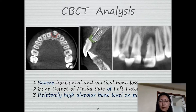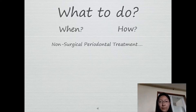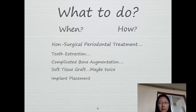Here is shown the ideal position of the implant and augmentation bone. For this patient, what would be the scenario — when and how to do it? Of course, he needs non-surgical periodontal treatment, tooth extraction, complicated bone augmentation, soft tissue graft maybe twice, implant placement, provisional crown to shape the soft tissue, and final crown.